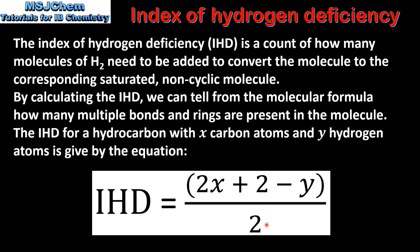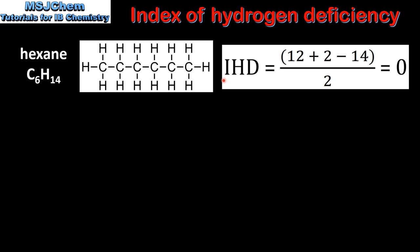Next we look at some examples, starting with hexane. The index of hydrogen deficiency for hexane is the number of carbon atoms multiplied by 2, which gives us 12, plus 2, minus the number of hydrogen atoms, divided by 2. This gives us an index of hydrogen deficiency of 0.